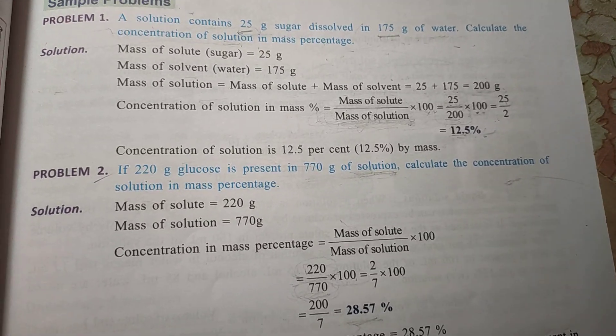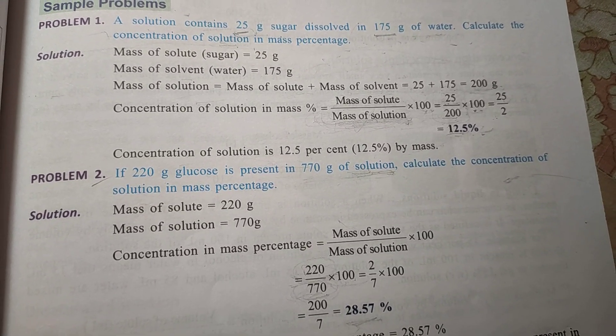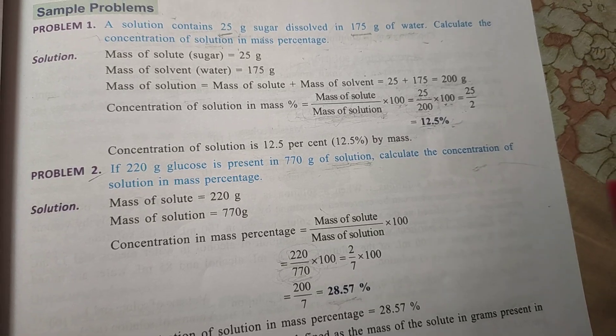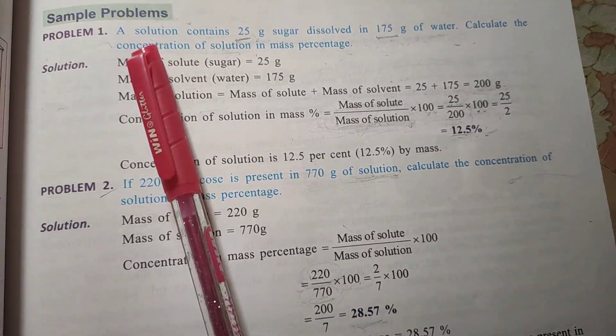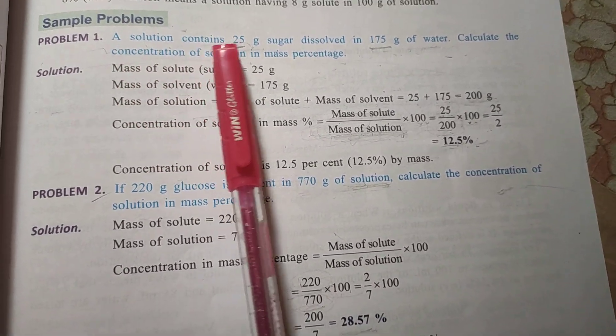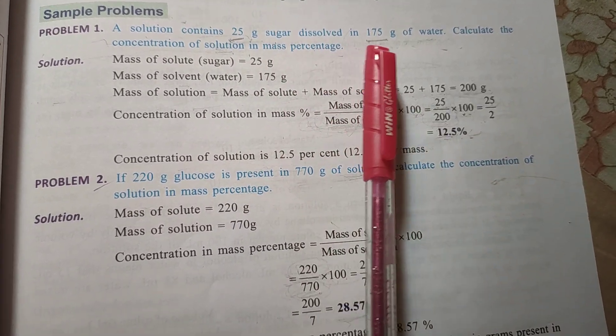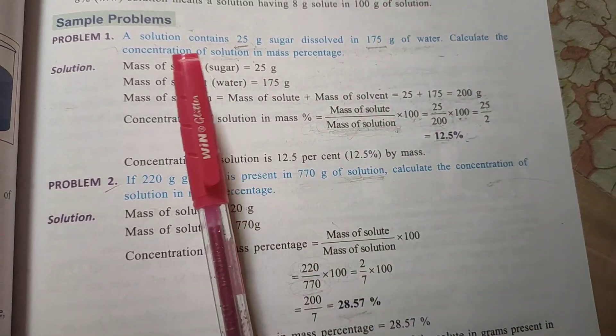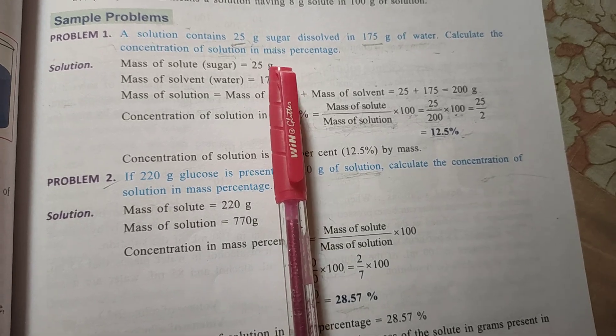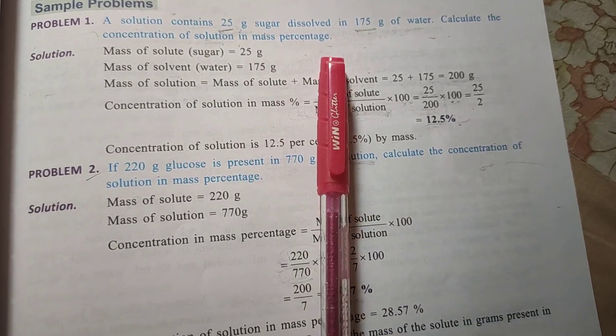Good morning students, today we are going to learn a few numericals from 'Is Matter Around Us Pure.' I am coming with 5 numericals from this chapter. The first question is: a solution contains 25 gram sugar dissolved in 175 gram of water. Calculate the concentration of solution in mass percentage. Then how do we find out?